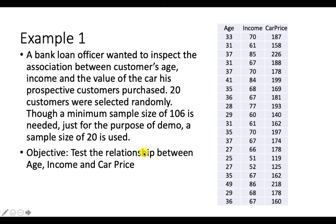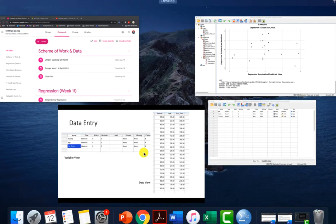When we talk about relationship, people often get confused with correlation. So let's change it to 'influence,' or you can say there's an effect of age and income on car price, or use the term 'prediction.' Don't forget you also need to state your hypothesis — it's basically the same as before, just with more independent variables added.